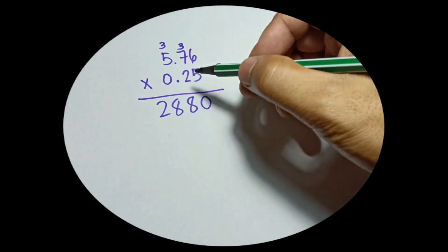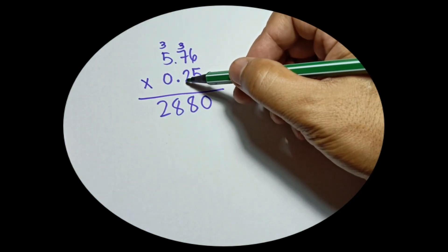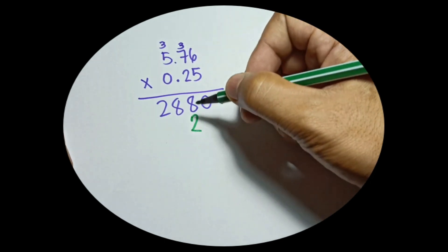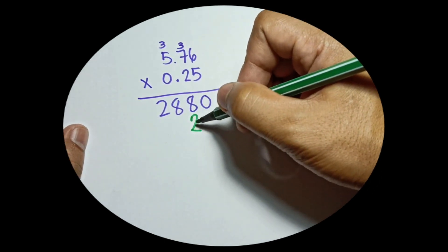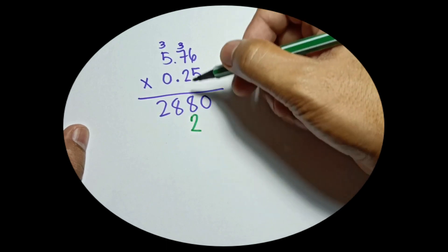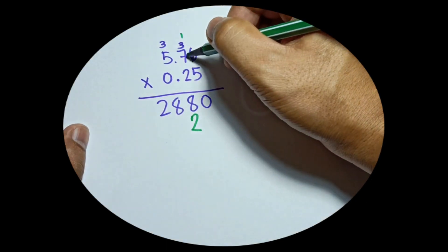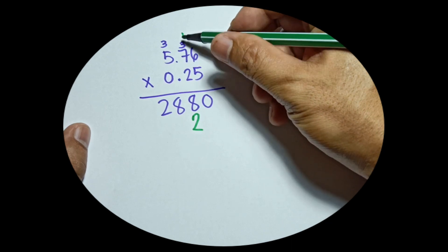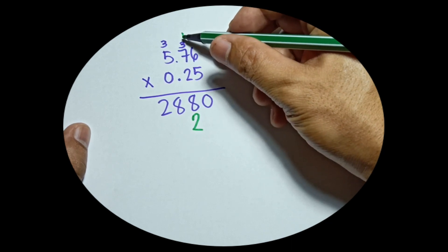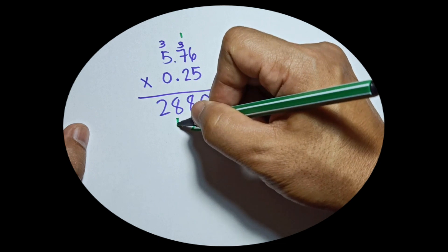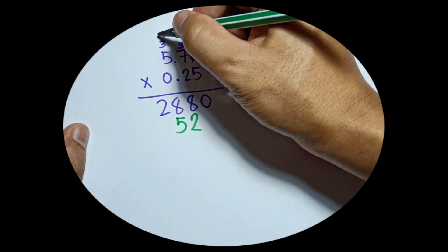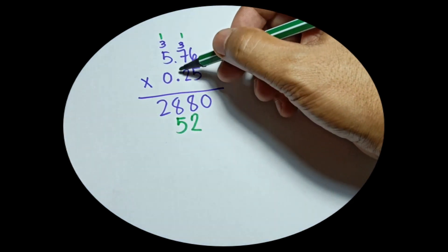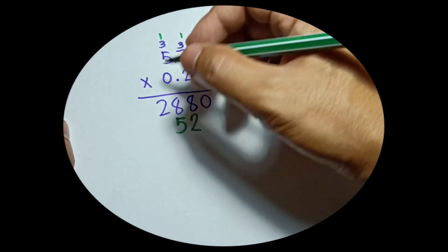Now for the second digit, which is 2: 2 times 6 is 12, write the answer on the second line and carry 1 on top of 7. 2 times 7 is 14 plus 1 is 15, so write 5 and carry 1 on top of 5. 2 times 5 is 10 plus 1 is 11.